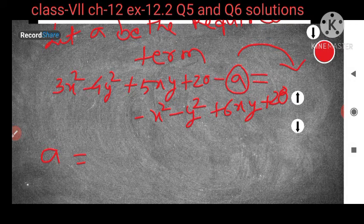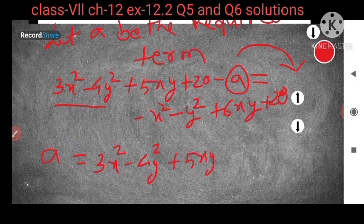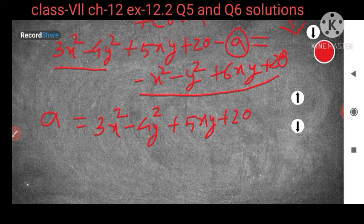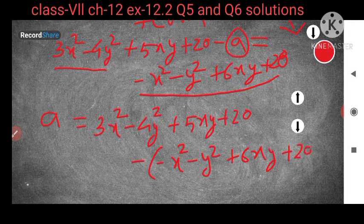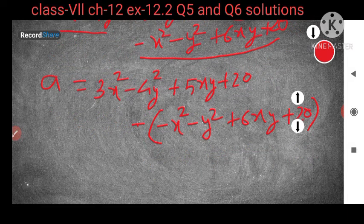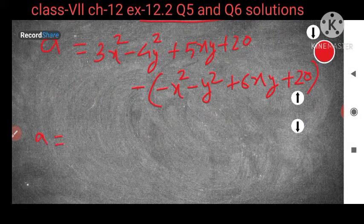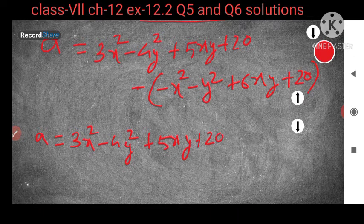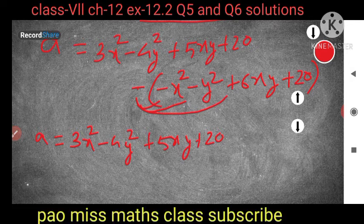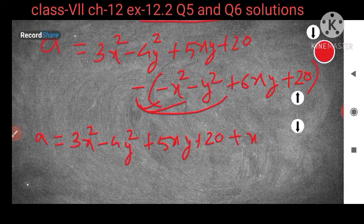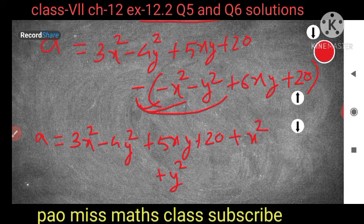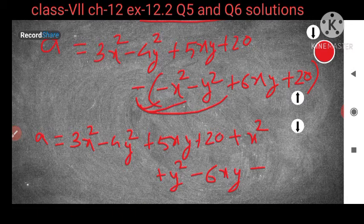So a is equal to — now this left hand side, the first term is 3x² minus 4y² plus 5xy plus 20. From this now we have to subtract — give inside the bracket minus, then minus x² minus y² plus 6xy plus 20. Now in the next step we will break the bracket, so the first term remains the same: a is equal to 3x² minus 4y² plus 5xy plus 20, then minus will multiply all terms of the second expression. So minus minus will become plus x², again minus minus will become plus y², minus plus will become minus 6xy, and minus plus will become minus 20.